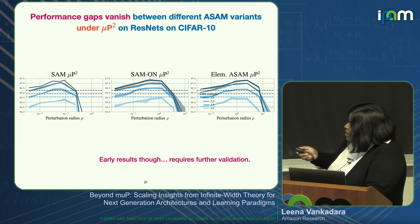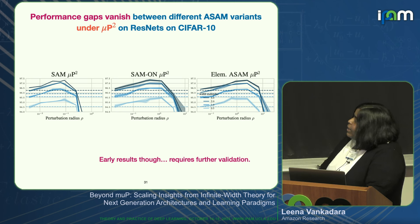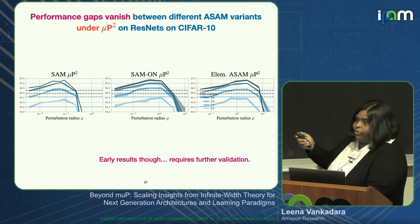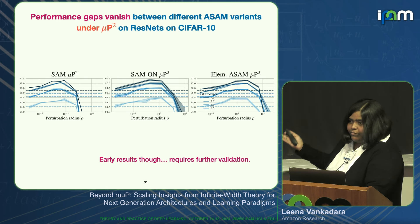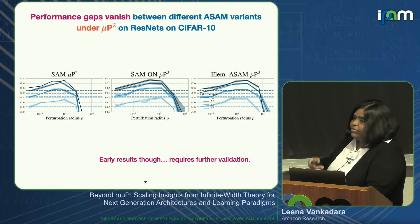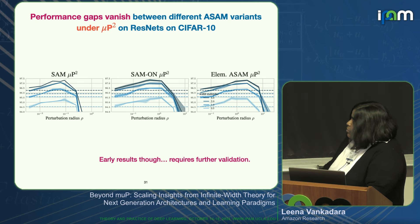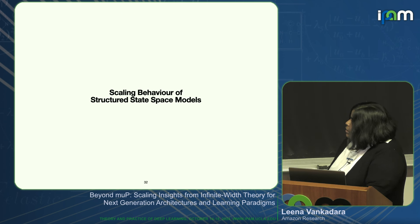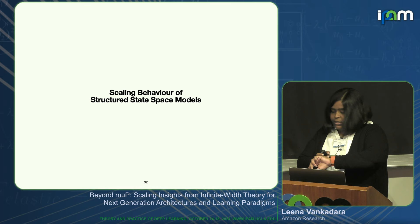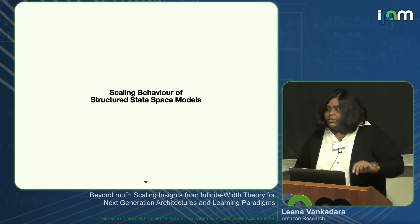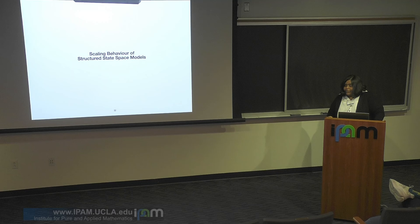Another interesting finding: if you correct for perturbation scalings across different SAM variants, performance gaps between the variants tend to vanish. Performance gaps are due to different scaling behaviors, not fundamental algorithmic differences. This also robustifies evaluation across variants.